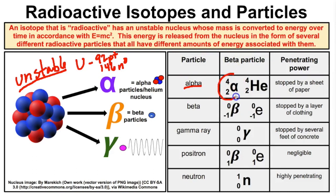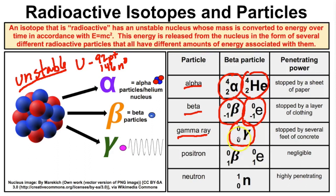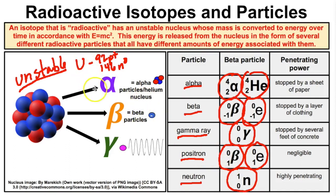What are the radioactive particles that can be emitted from unstable radioactive nuclei? You've got alpha particles, which have specific symbols and can typically be stopped by a sheet of paper. Then there are beta particles, which can probably be stopped by a layer of clothing. Radioactive nuclei can also emit gamma rays — this Greek letter symbol, with mass number of zero and atomic number of zero — which are super high energy forms of electromagnetic radiation requiring several feet of concrete to stop. They can also emit positrons and neutrons, which are also highly penetrating.